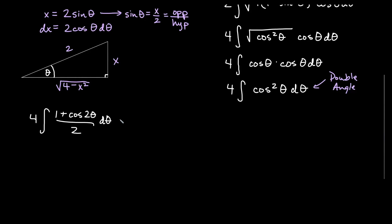So I'm going to go ahead and bump out the over 2 and just say 4 over 2 on the outside is 2. And then we'll have the antiderivative of 1 plus cosine of 2 theta d theta. And this integral is not so bad once we do that.